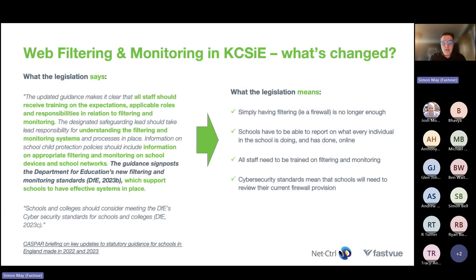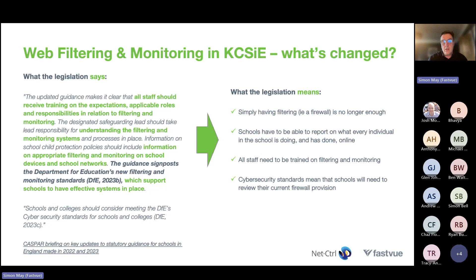Last September the KCSie guidelines were updated, and the biggest single set of changes are in the web filtering and monitoring piece. Fundamentally, prior to the September update, if you had a firewall with the ability to filter and block content, you were compliant. After September, simply having a firewall was no longer enough. You now need to be able to report on what every single staff member and every single student is doing online.